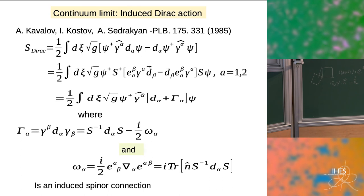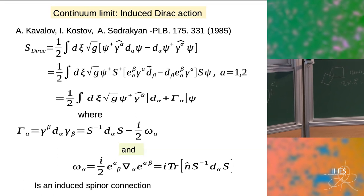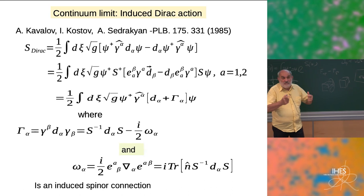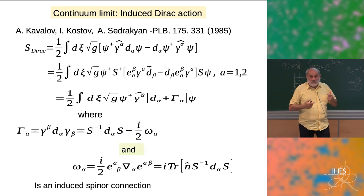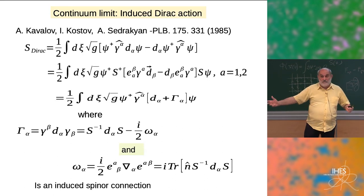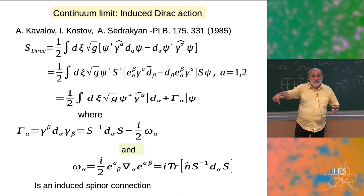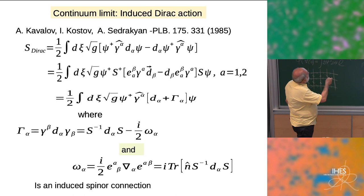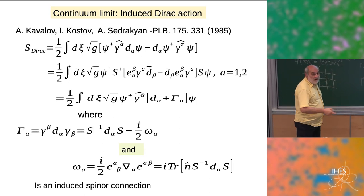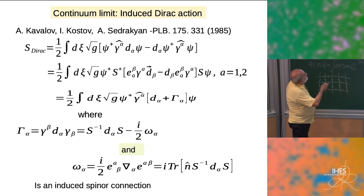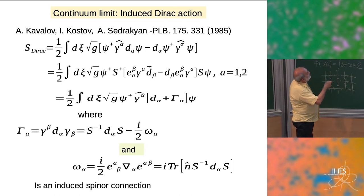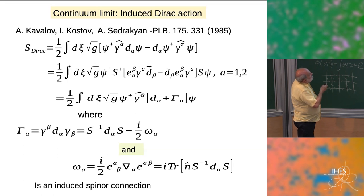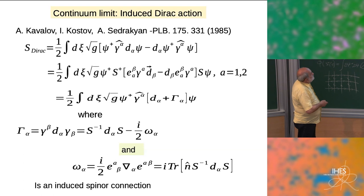In some sense, from the previous picture you can guess what kind of theory it should be. This induced Dirac action is a very natural description of what happens on the surface for three-dimensional fermions. The curved surface: when you rotate at each point, the S matrix appears as a rotation, and inside the worldsheet it's a 2D Dirac action, rotated from the left-hand side.